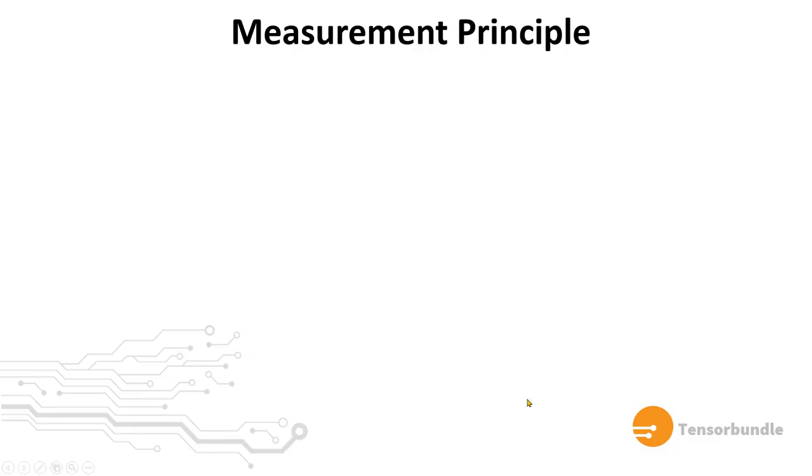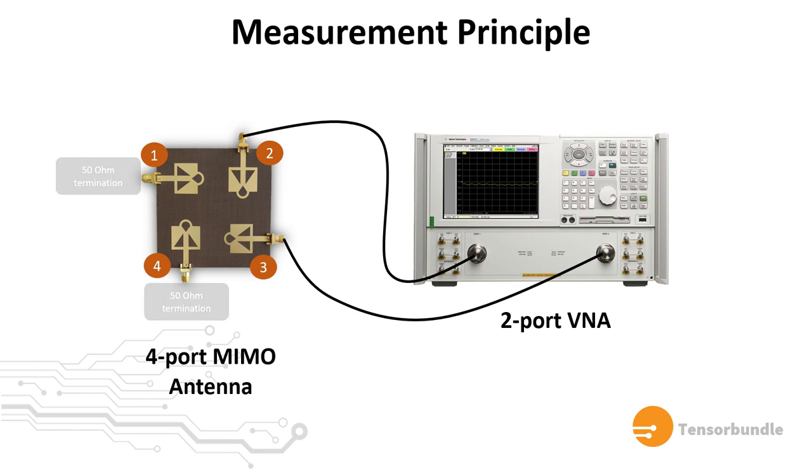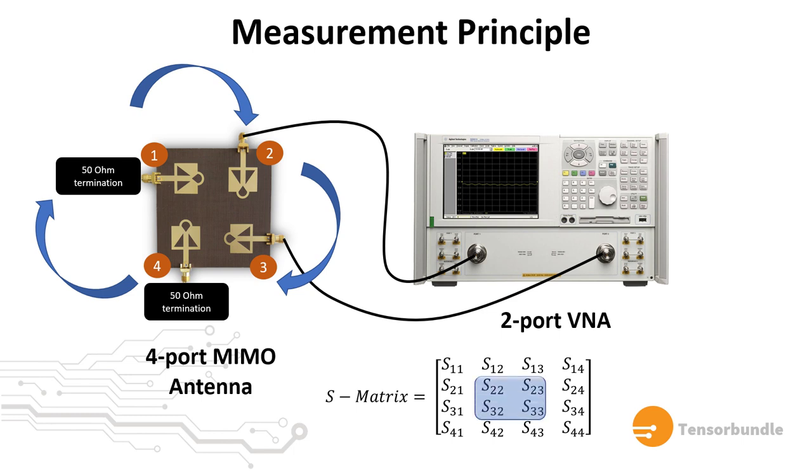So let's wrap up the principle of measurement of a four-port MIMO antenna with a two-port VNA. You need to basically connect two antenna ports to the two ports of the VNA and then terminate the other two antenna elements with 50 ohm broadband load terminations. And you have to repeat this process for each of the ports and basically you have to make every combination so that you can cover all the elements inside this matrix. So for this configuration in the figure, we are basically measuring only a particular block of this matrix. In this case, it is only measuring this little 2x2 matrix of this 16 element matrix.